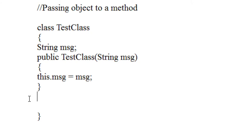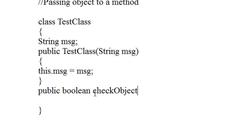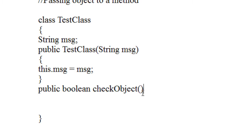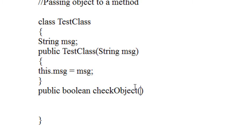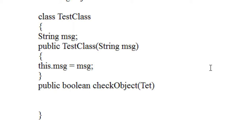Now I am going to create another method in this class. I make the return type of that method as boolean, and the method name is checkObject. I just create a method with return type boolean and the name checkObject. I am going to pass an object of this class to this method, so the type is the name of the class, TestClass, and I give it as obj.